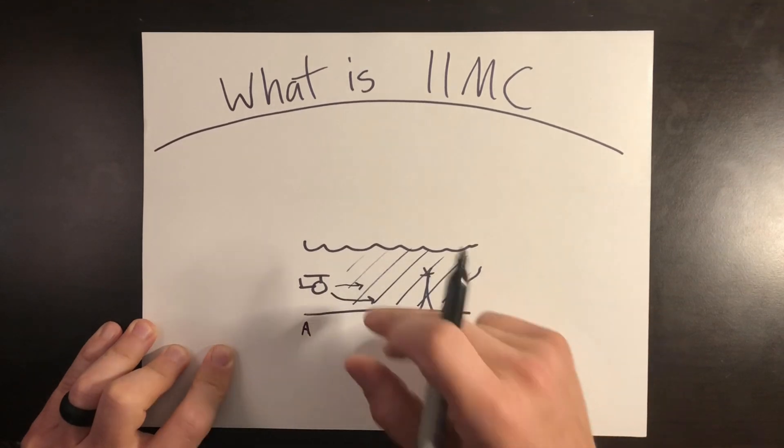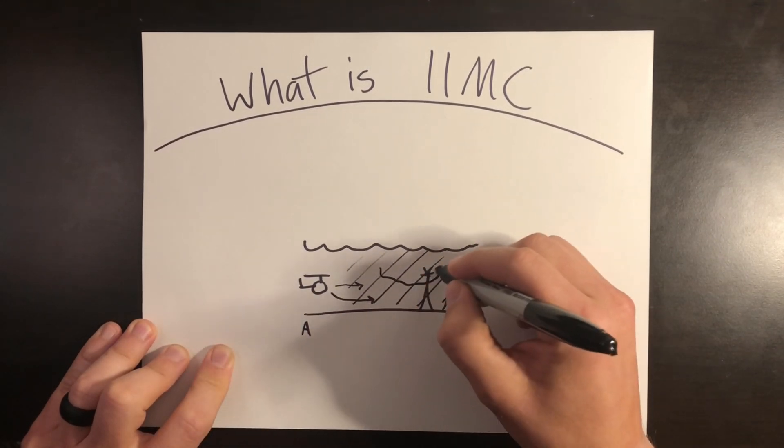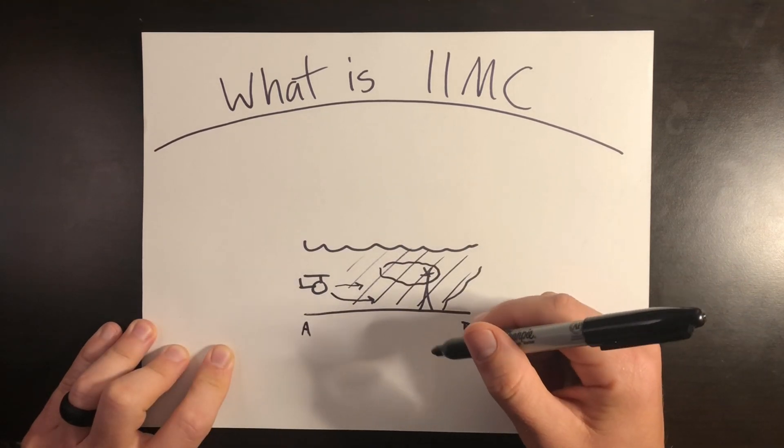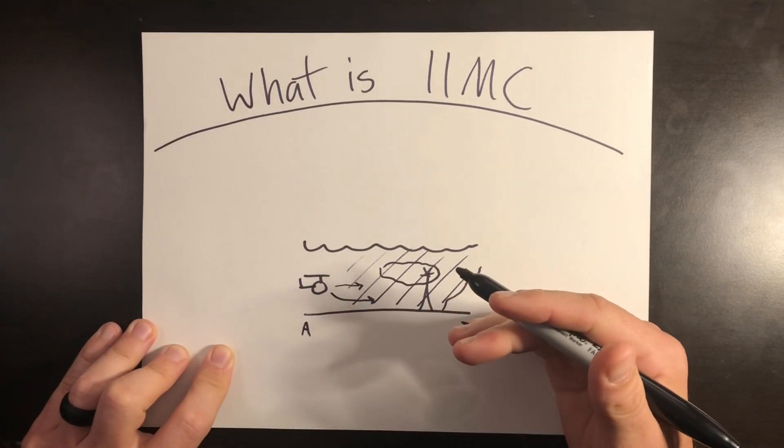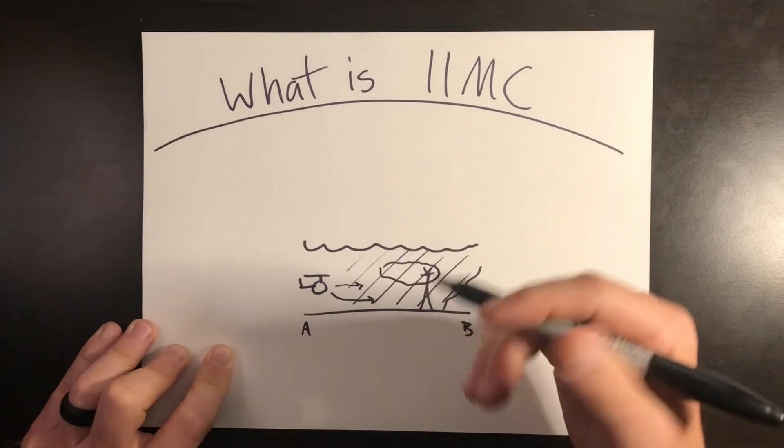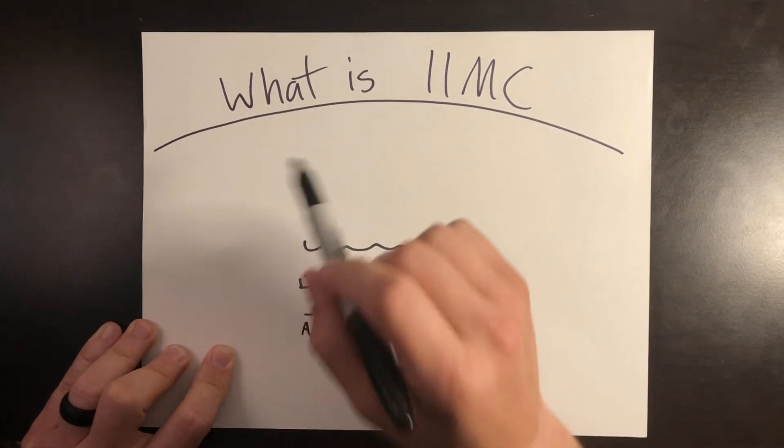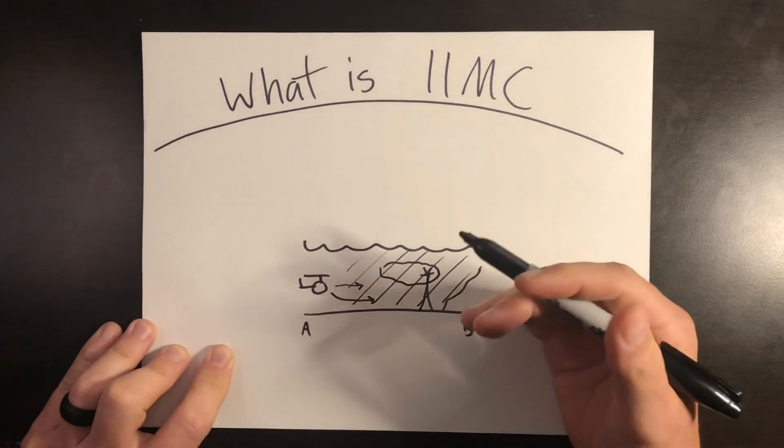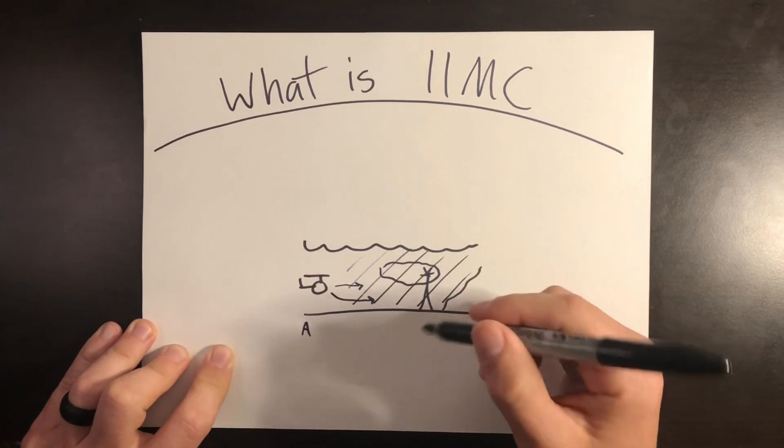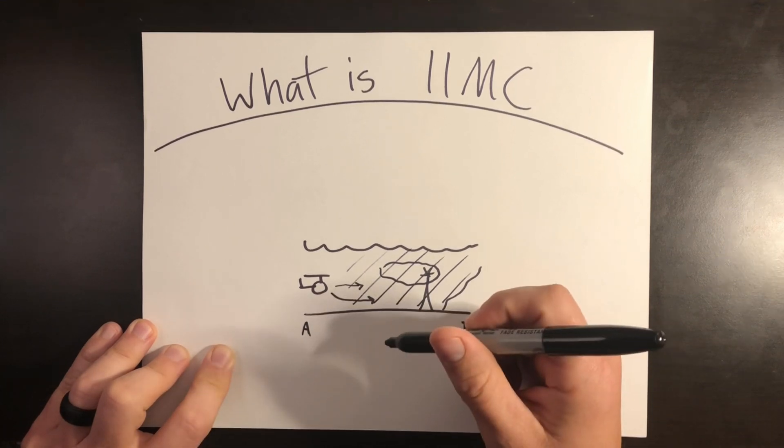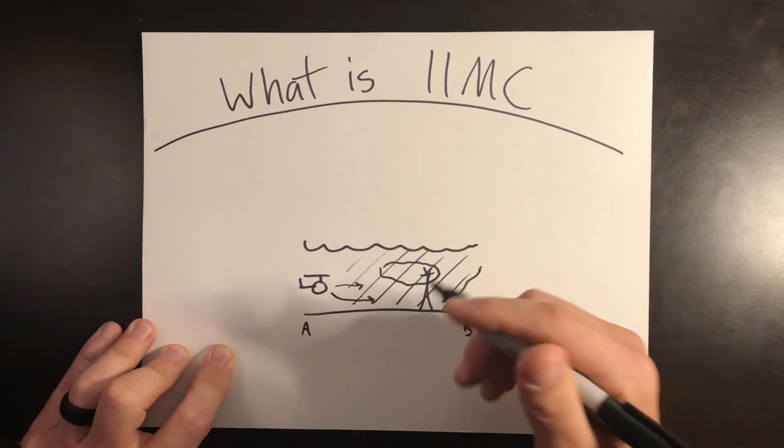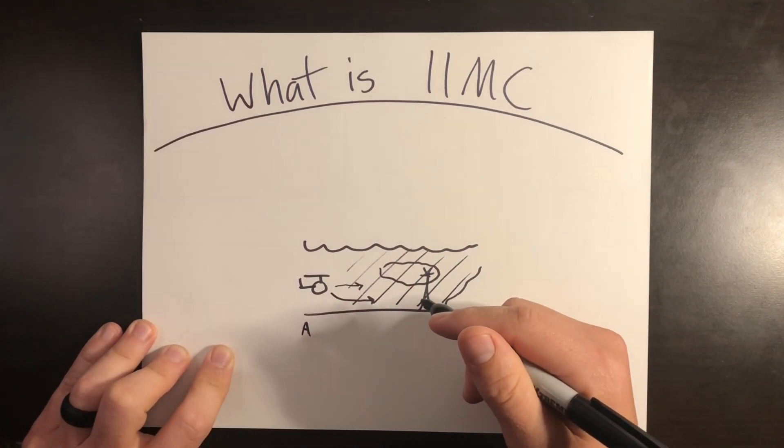It might've been another cloud bank here that you just didn't see and then now the helicopter just went into it. But imagine driving in your car in the rain and then all of a sudden somebody just throws a bag over your head and now you are now inadvertent instrument meteorological conditions. That is a condition where the only safe way to fly is 100% reliant on cockpit instruments and instrument navigation because you've lost all visual cues or there are no visual cues that you can use for navigation.